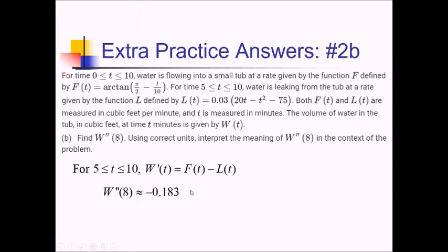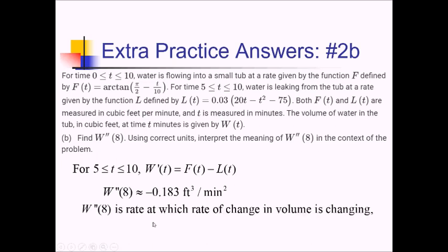The units of W prime were cubic feet per minute. Taking the derivative of that with respect to time gives cubic feet per minute per minute, so cubic feet per minute squared. W double prime of 8 represents the rate at which the rate of change in volume is changing — at time 8 minutes, this rate is negative 0.183 cubic feet per minute squared.